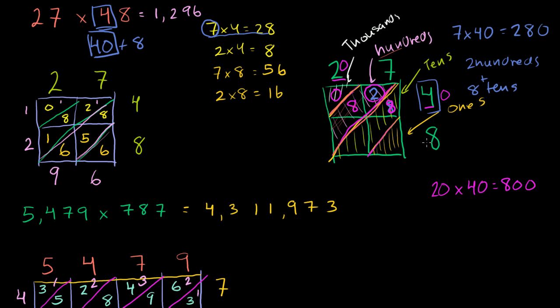When you multiply 7 times 8, remember, this is really 7. Well, this is the 7 in 27, so it's just a regular 7. This is the 8 in 48, so it's just a regular 8. 7 times 8 is 56. You write a 6 in the ones place. 56 is just 5 tens and 6 ones. So it's 5 tens in the tens diagonal and 1 six, 56.